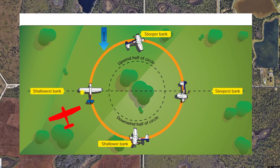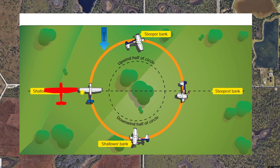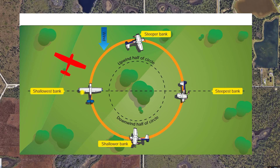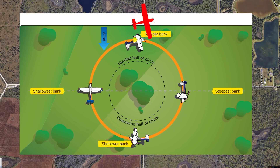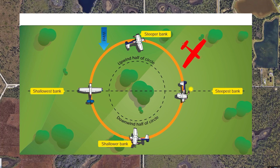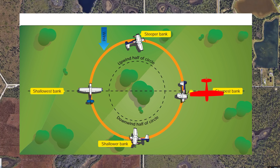As you come around into the second 90-degree section of the circle, you're going to shallow your bank slightly — rolling nearly wings-level as you work your way upwind back abeam your point. If you keep bank angle in there, you're going to keep turning and get blown too close to your point, so shallow the bank and work your way upwind. As you get adequately far upwind into the third quarter of the turn, start rolling in the bank again — steeper and steeper — until the fourth quarter, where your ground speed is increasing and your rate of turn needs to increase as well to complete the turn in time.